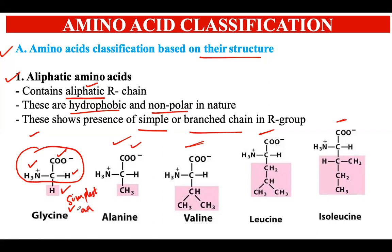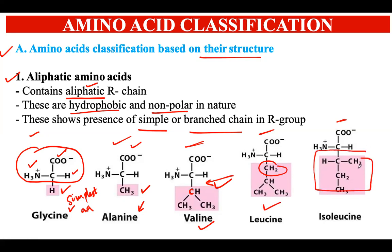If the R group is a methyl group (CH3), that is alanine. If there is a branched structure where a carbon has two methyl groups attached to it, that is valine. If one more carbon is added to that chain, it becomes leucine. And if there is a four-carbon arrangement in the R group with a branched chain, that is isoleucine.